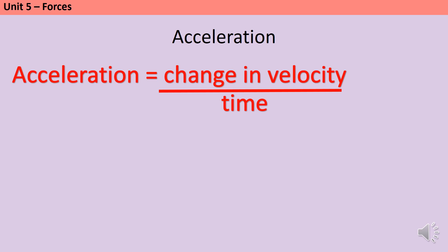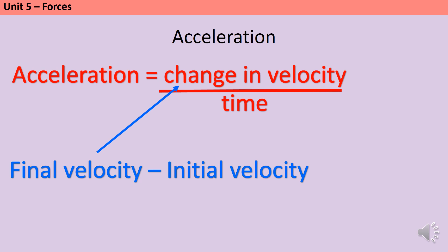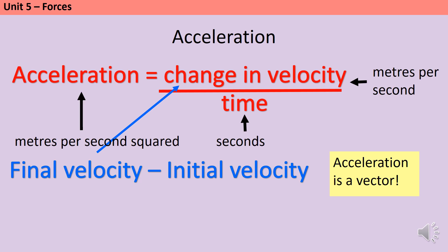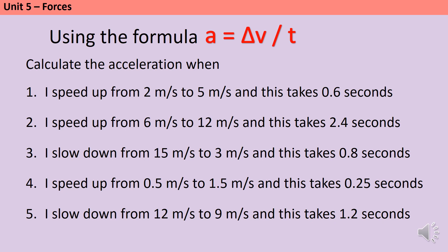Acceleration can be calculated using the seventh equation from the physics equation sheet: acceleration equals change in velocity divided by time. We can calculate change in velocity by doing the final velocity subtract the initial velocity. Remember, acceleration is a vector — it has a direction and can be a negative number. A negative acceleration tells you that the object is slowing down rather than speeding up. We measure acceleration in meters per second squared, time in seconds, and velocity in meters per second.